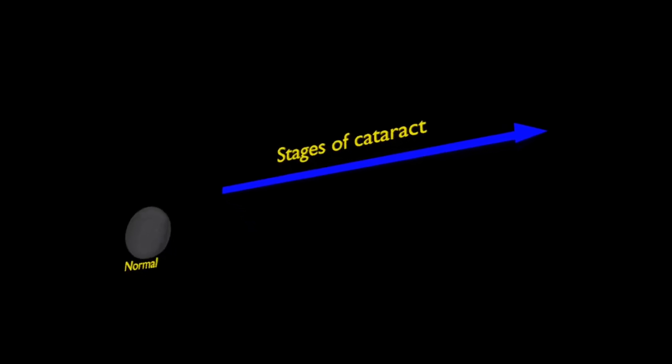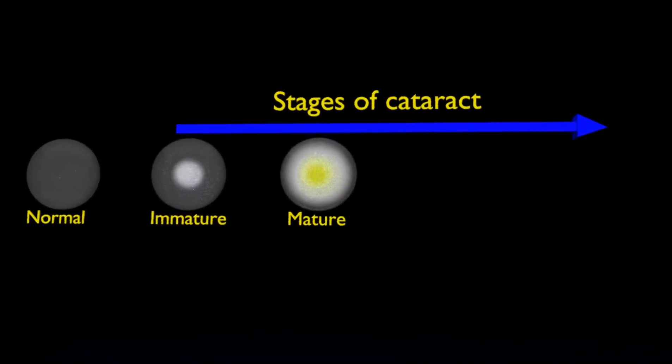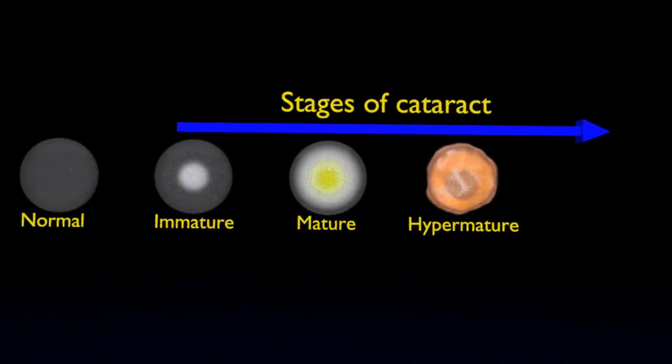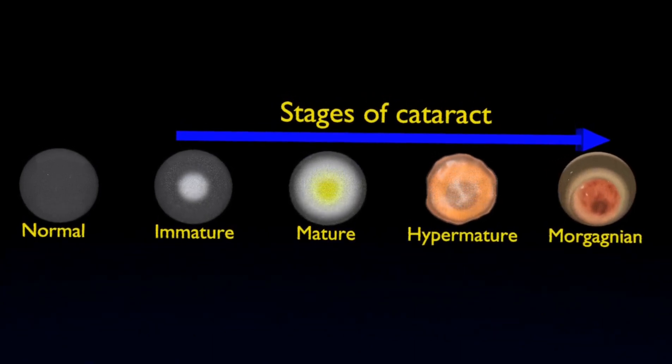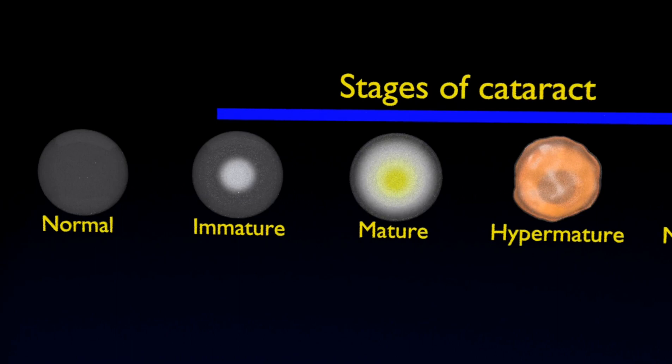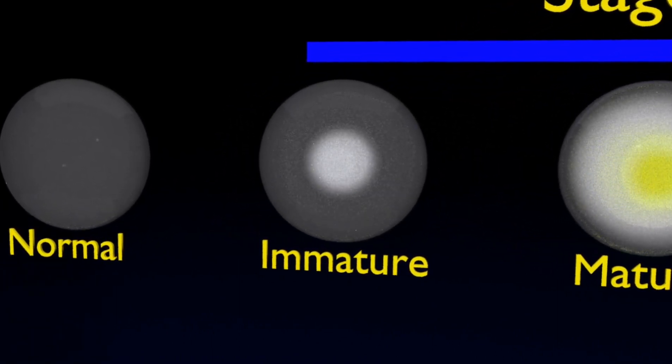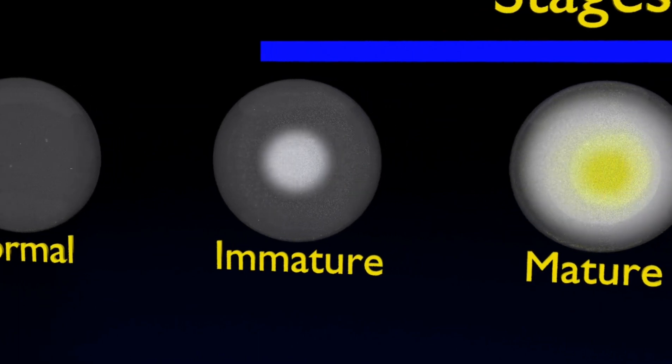Stages of cataract: First, the early cataract. The lens is still clear, but the ability to change focus between near and far vision has become compromised.